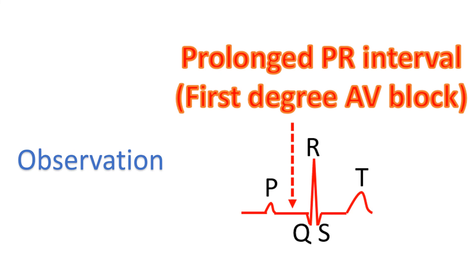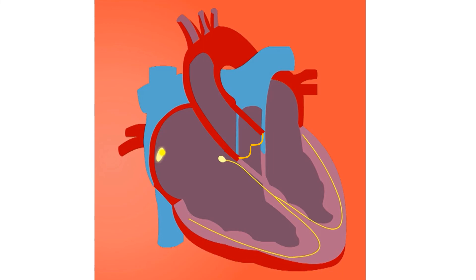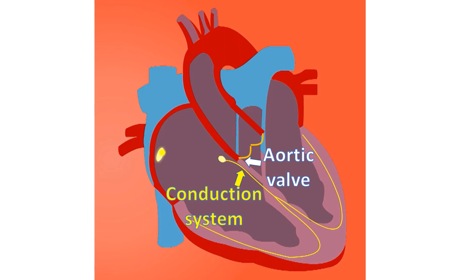First degree AV block usually does not need any treatment by itself, though associated conditions may need treatment. Close observation is needed if first degree AV block is associated with other conditions, as it can progress to complete heart block. First degree AV block in older persons due to degeneration of the conduction system or aortic valve can also progress. In a very rare instance, infection of the aortic valve causing first degree AV block can progress rapidly to complete heart block and need early surgery, as the aortic valve is situated very near the conduction system of the heart.